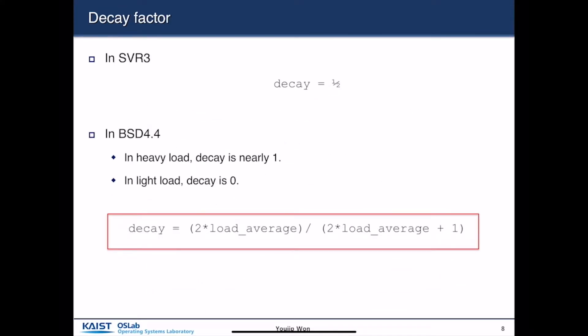In System V Release 3, the decay factor was 0.5. In BSD 4.4, it incorporated a more sophisticated mechanism. In heavy load, the scheduler wants the decay factor to be nearly one. In light load, the decay factor converges to zero. To achieve this, the decay factor is: two times load_average divided by two times load_average plus one. If load_average is large, this value converges to one; if load_average is nearly zero, this value converges to zero.